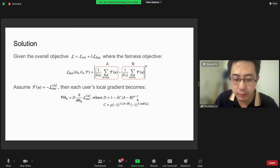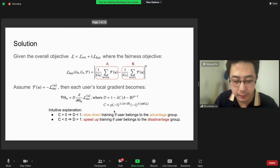The gradient is separable as the original gradient of the recommendation loss multiplied by a scalar d. We have a simple intuitive explanation: when you have a user that belongs to an advantaged group with higher performance, it should slow down its local training; otherwise, you should speed up its local training when it belongs to the disadvantaged group.